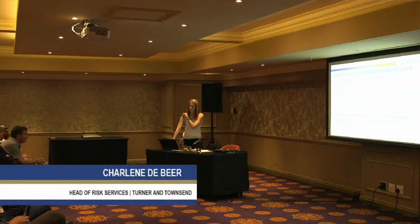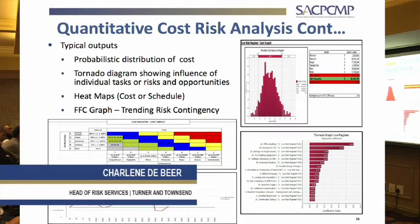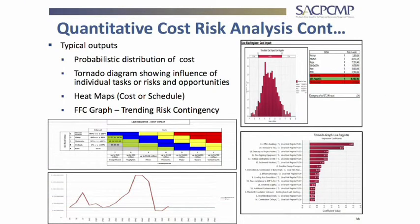We use probability of cost analysis or schedule overrun, and we have two separate risk registers we can do. These are the outputs we get from a quantitative Monte Carlo simulation. We get a probabilistic distribution of cost, giving us P50, and you can ask it to give you P10, 50, and 80%. You can choose any probability range you wish.